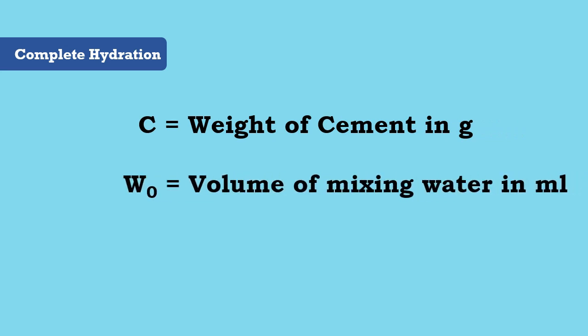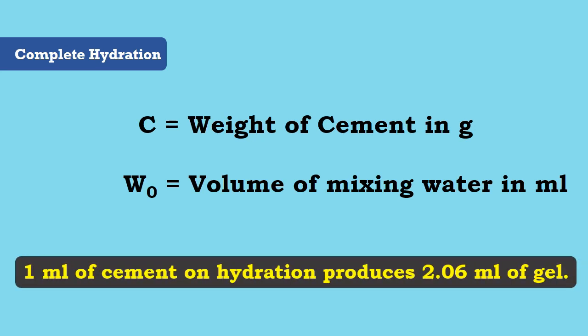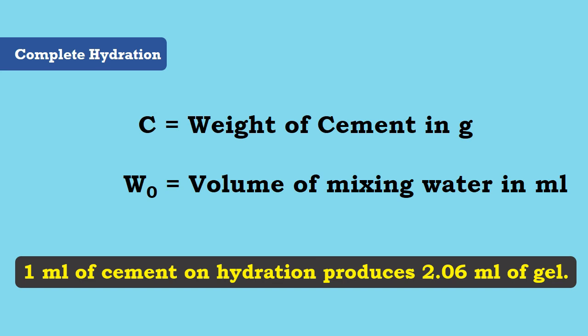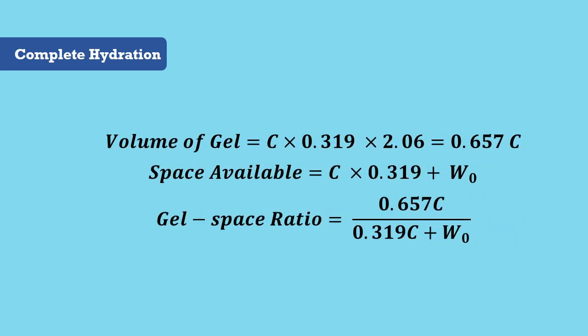For complete hydration, let C be the weight of cement in grams and w₀ be the volume of mixing water in ml. Assuming 1 ml of cement on hydration produces 2.06 ml of gel, then volume of gel and space available is expressed. Finally, the gel space ratio equation becomes...